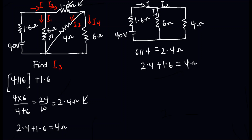From here you can use the formula V equals IR to find the total current in the circuit. The current equals voltage over total resistance, which is 40 over 4, and that gives us 10 amperes. So 10 amperes is the total current in the circuit.